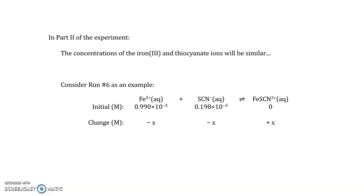With that Beer-Lambert plot produced, we then turn our attention to the second part of the experiment, where the concentrations of the iron(III) and the thiocyanate ions will be similar. Given the similar concentrations, we expect this particular system to stop far short of completion, but rather reach equilibrium.